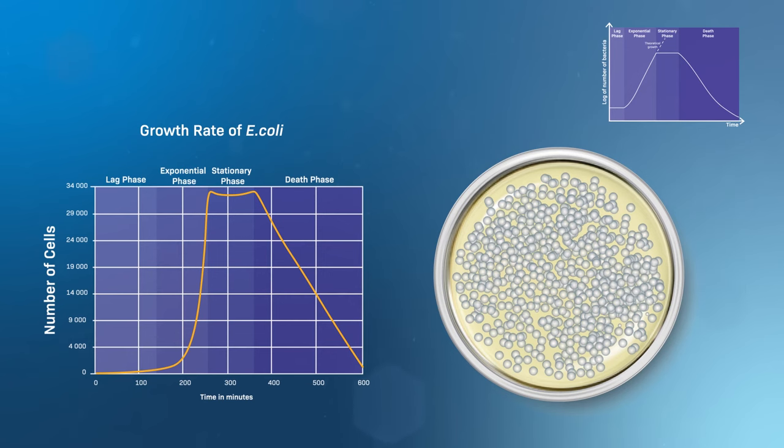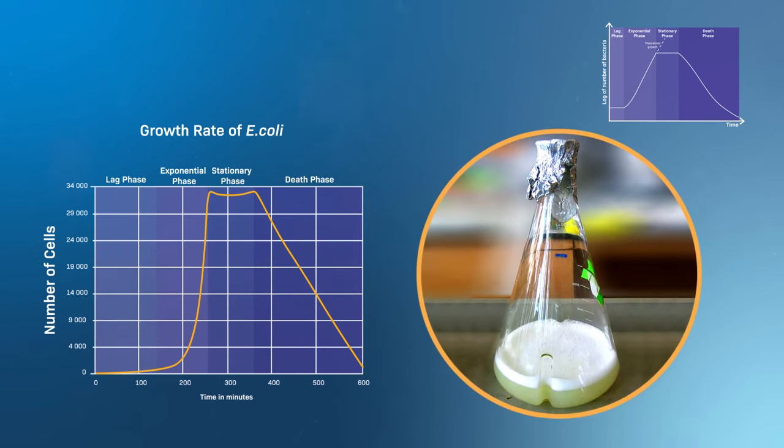When scientists use bacterial cells to produce proteins, they allow the cells to grow through the exponential phase to maximize the number of cells produced.